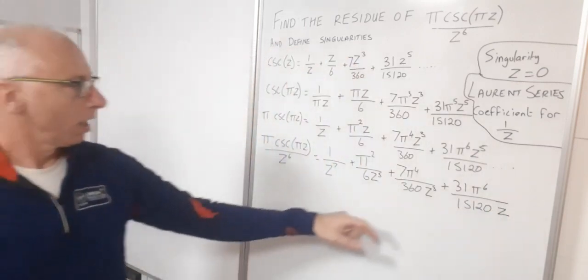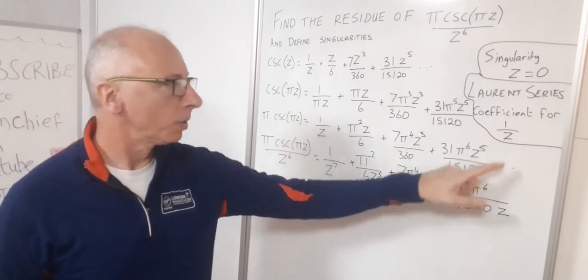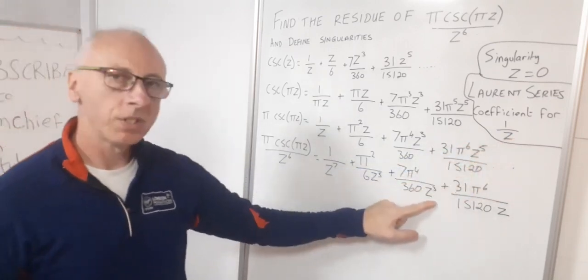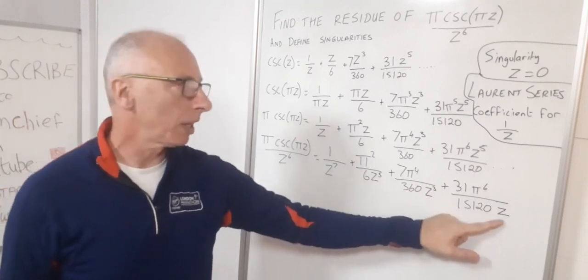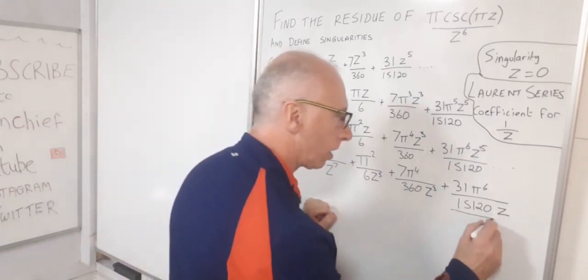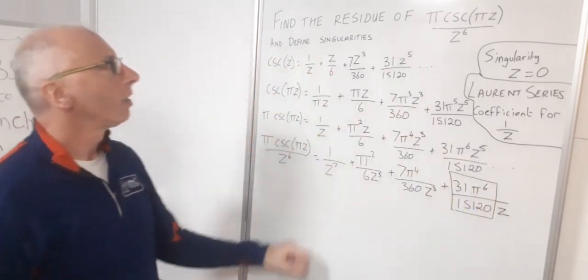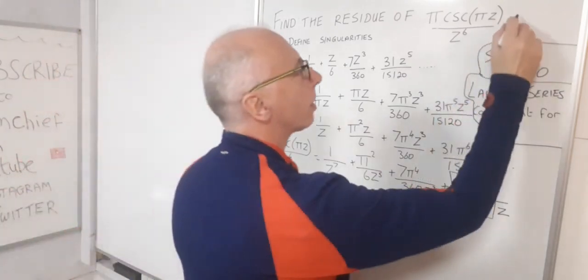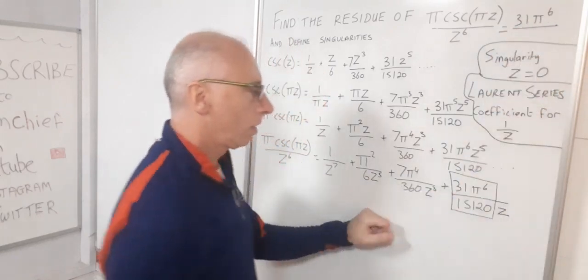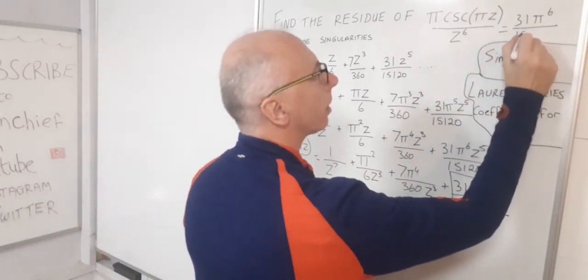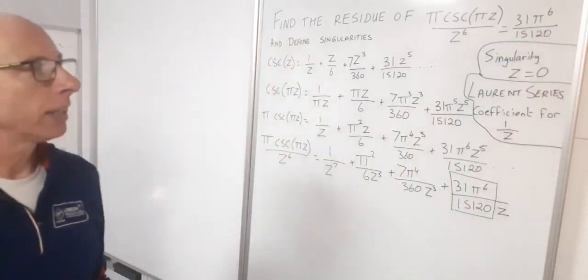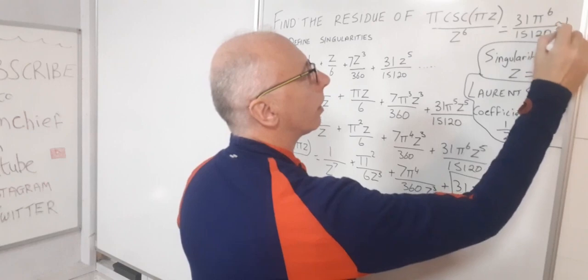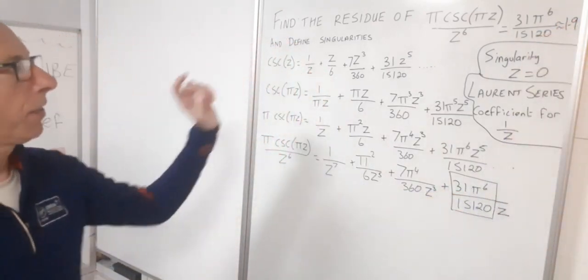Because now I've opened up what I can see is my residue. So remember we're looking for the coefficient for the term that's got 1/z. So these are all z to the minus 7, minus 5, minus 3. This is z to the minus 1 which is what we want. So this here is going to be my coefficient. So therefore the residue of this is 31π⁶/15,120. Now we can plug that into our calculator and it's going to be just over 1.9. Okay so that's the first part of the question taken care of.